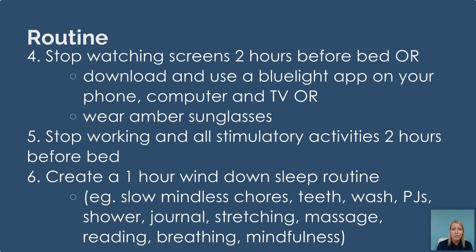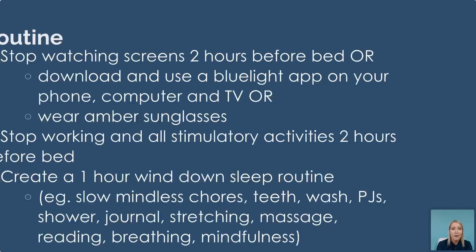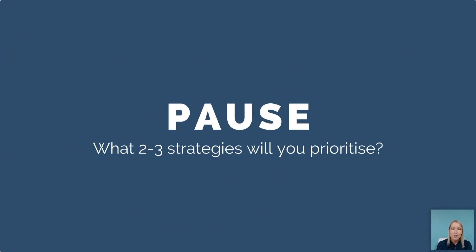Some examples of what you can include in your wind-down routine: slow down and use mindless chores, your teeth routine, wash and have a shower, get changed into your PJs, journal, do some stretching, give yourself a little massage, do some reading, breathing, or mindfulness. There are six different options. If you're following along in your workbook, you can review them now. I want to ask you: what two to three strategies will you prioritize when it comes to your routine?